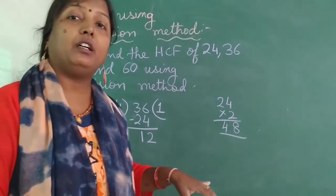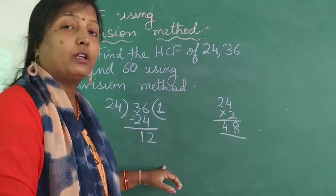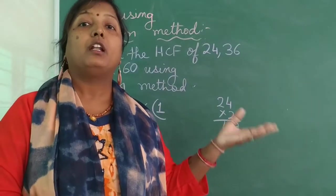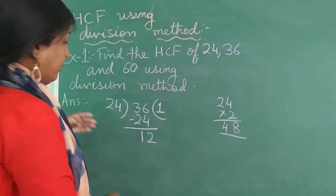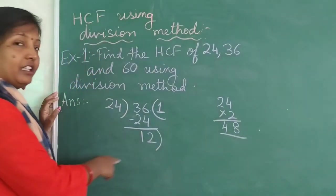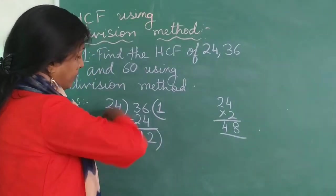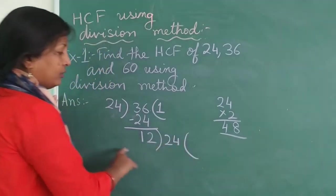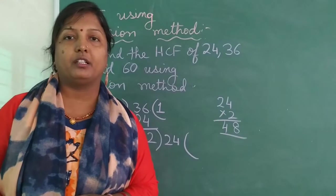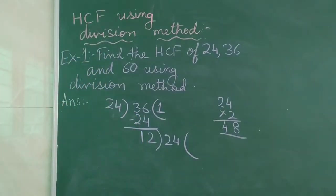Now you got the remainder 12. After this there is no carry, so your division is complete. Now what next? What we are going to do is, whatever is your remainder, you make that as the divisor. And whatever is the divisor, you make that as your dividend. So this is the small change in the division method.